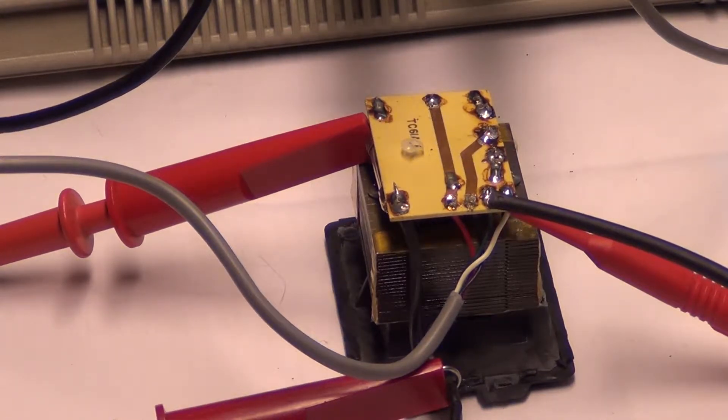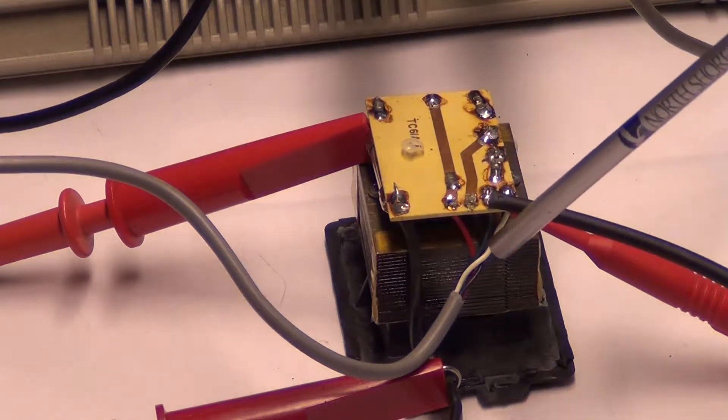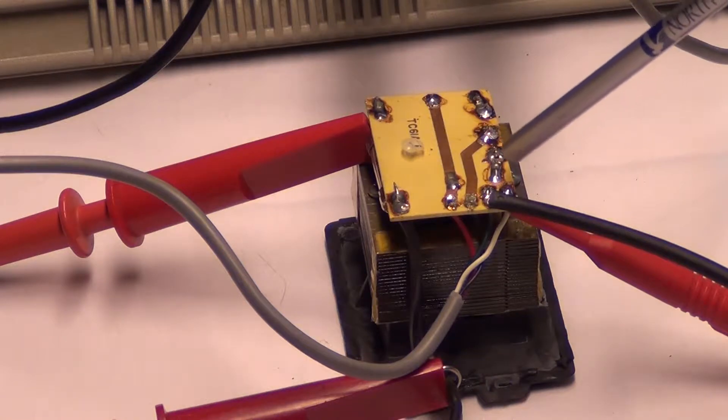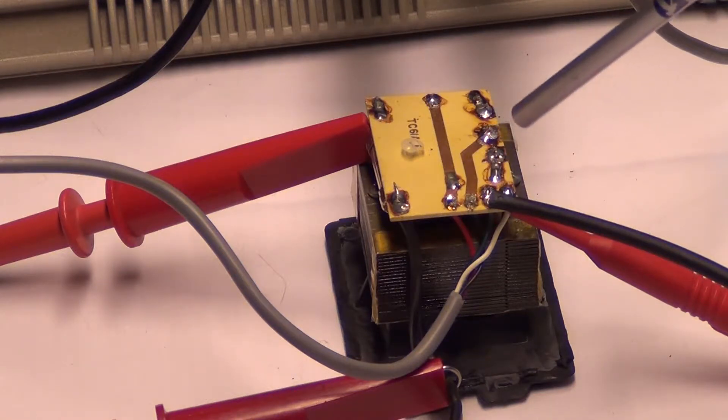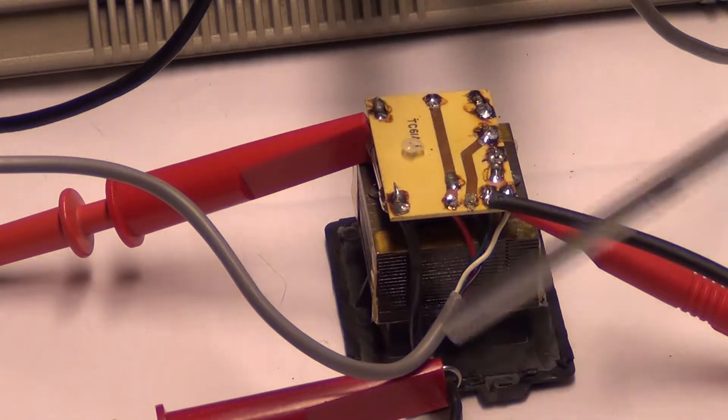And right now, there's a black and a red lead right here. This is on these two pins right here, which is the white wire and the green wire. It's on the AC output, which you should see somewhere around 17 volts AC, RMS.